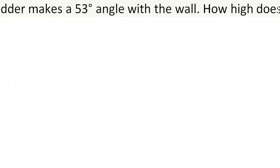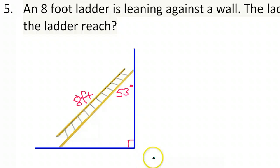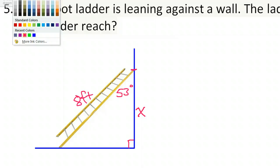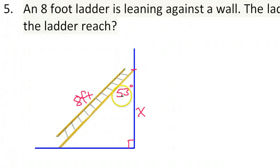Which trig function are we going to use this time? Let's see. From this angle, the x here is adjacent. And of course the eight feet, the ladder itself, is the hypotenuse. So adjacent, hypotenuse. Which function is that? That's the cosine function. Cosine of 53 degrees, adjacent over hypotenuse. So that's x over eight.